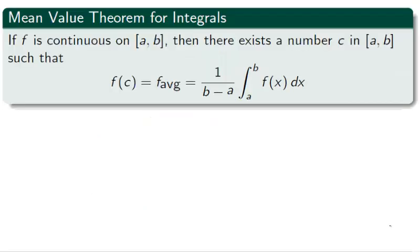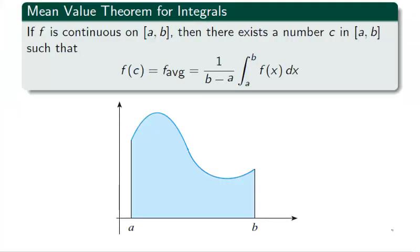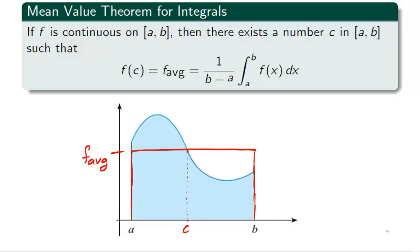The mean value theorem for integrals states that a continuous function f on the interval ab attains its average value for some c in the interval ab. Graphically, given a continuous function f on the interval ab, the average value of f would be the height of the rectangle sharing the base interval ab, whose area is the area under the curve. Imagine the curve as a pile of sand, which when leveled is the red rectangle.